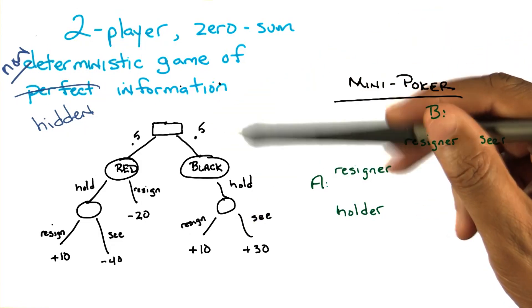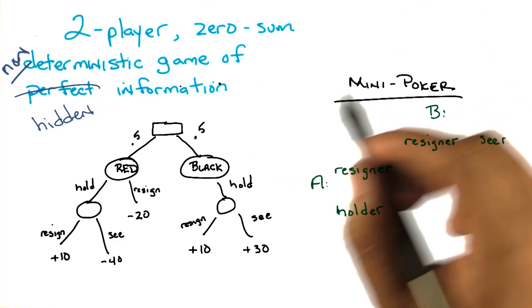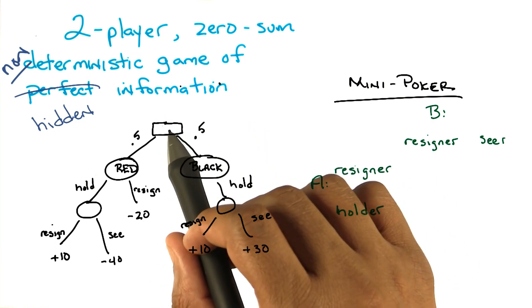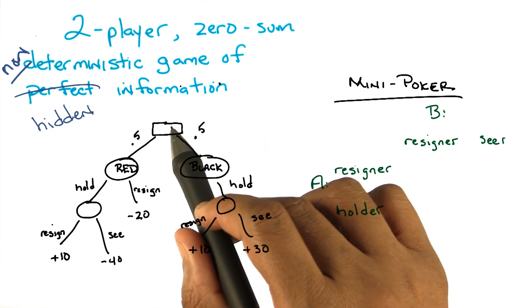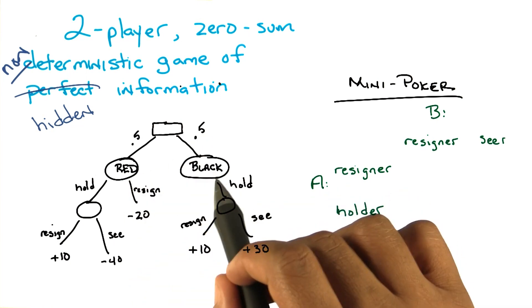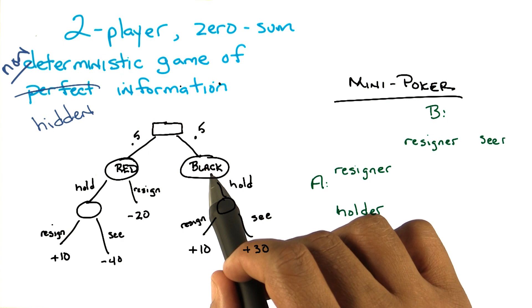Okay, so Michael, here's the tree version of what I just said. So remember, I draw squares as chance nodes, and so chance takes a chance. And half the time, we end up in a state where A has a red card, and half the time we end up in a state where A has a black card.